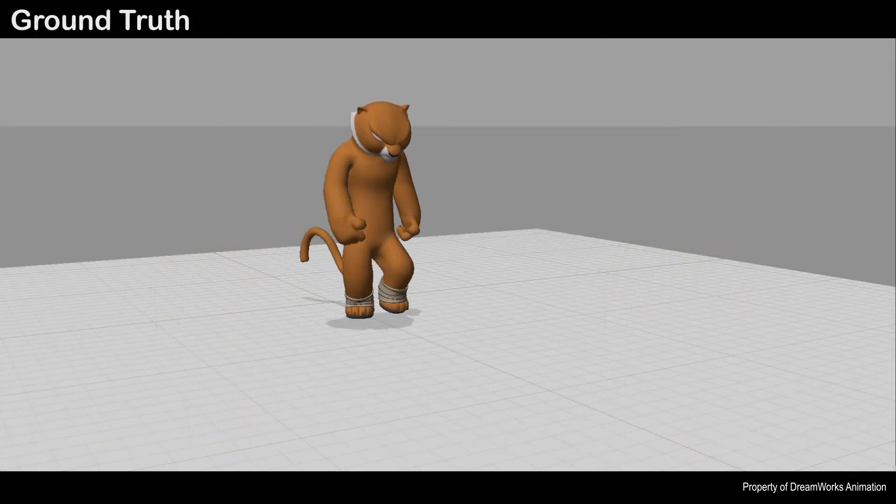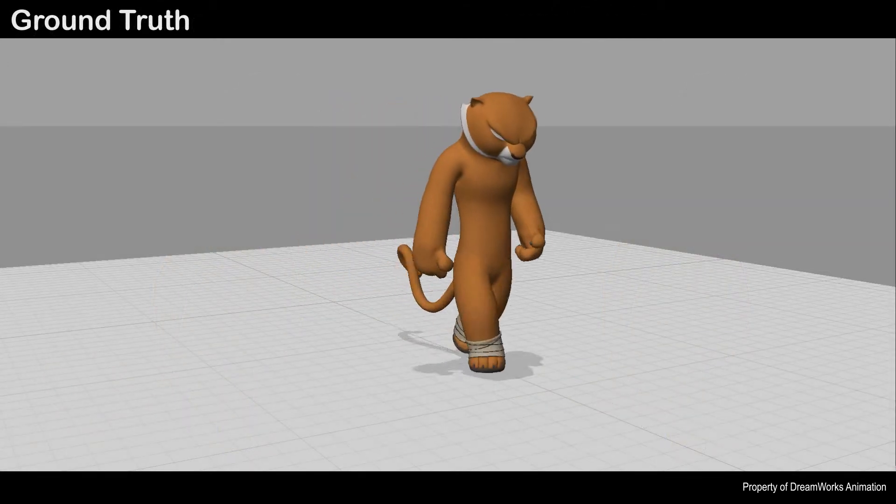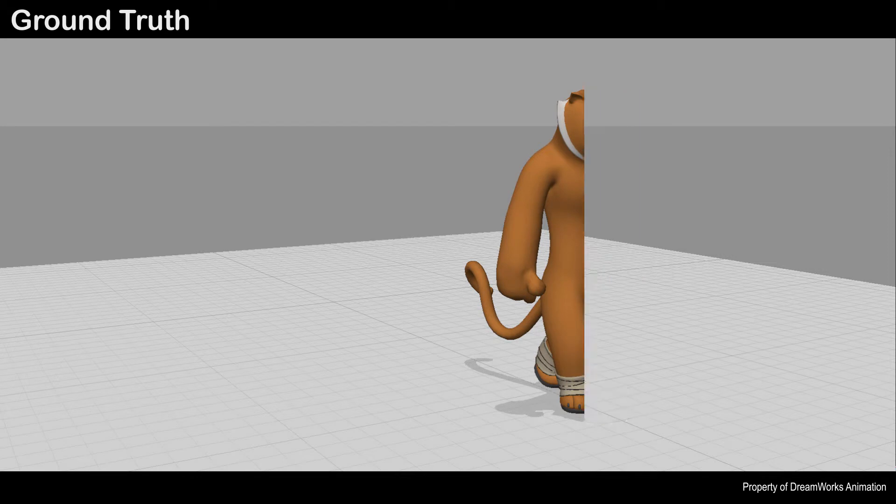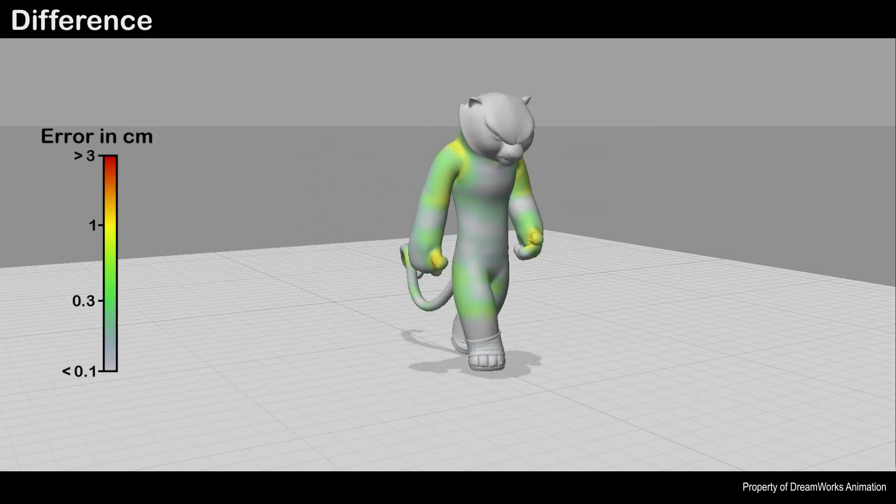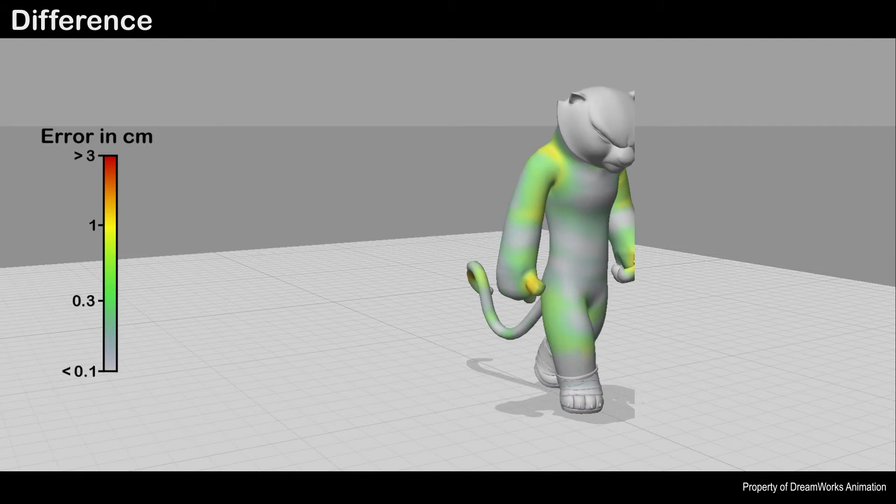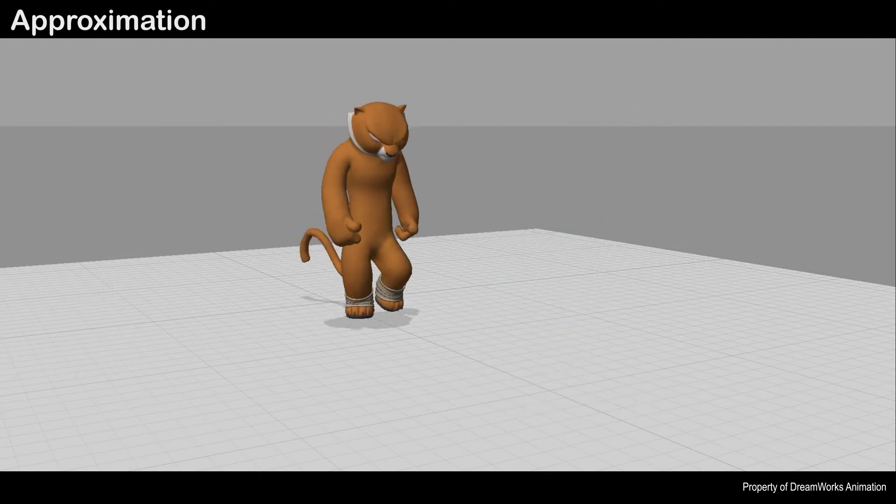Finally, we show a comparison with a walk cycle for Tigris. This character is 1.8 meters tall and the average vertex error of our approximation is 0.87 millimeters in this animation.